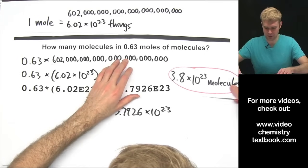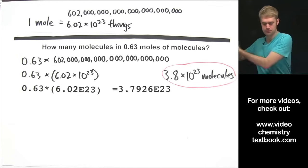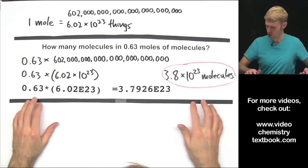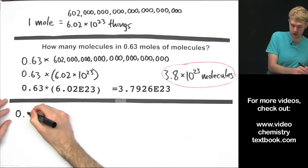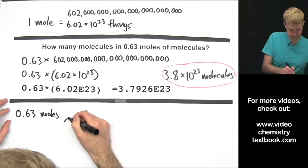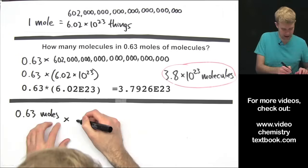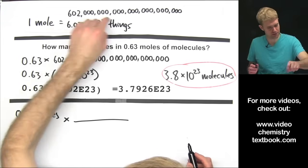We'll put this up here to remind ourselves what the answer is. And now let's use conversion factors to solve this problem in case you have to do that. We are going to start with 0.63 moles and we're going to want to multiply that by a conversion factor that's going to get rid of the moles.